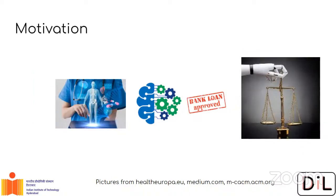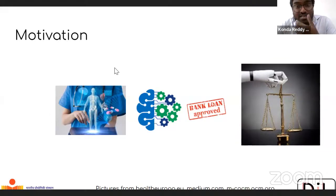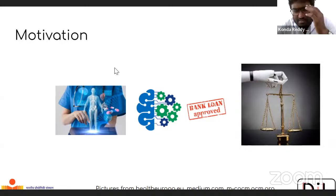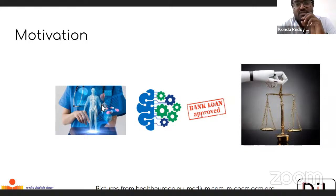But think of critical applications like healthcare or the judicial system — if they make a mistake, it's going to be really costly. Autonomous vehicles also need to be really, really good, and we cannot afford even a single mistake. So particularly when we deploy algorithms in these critical applications, we want these algorithms to be explainable.